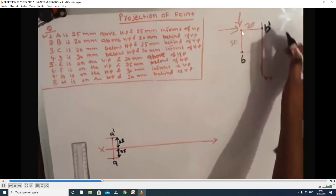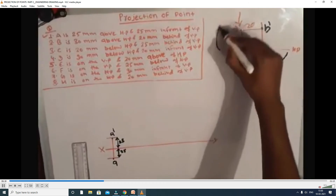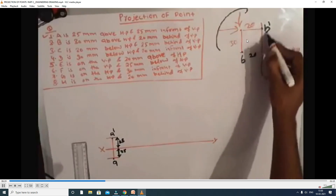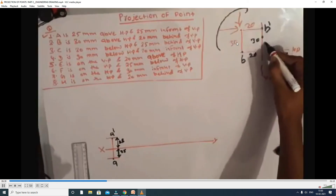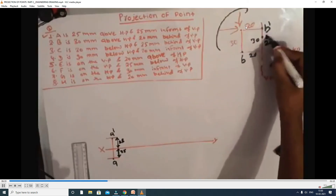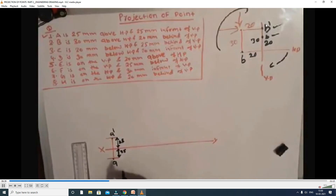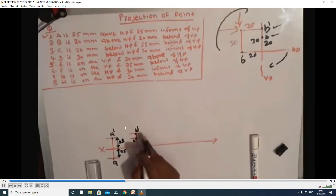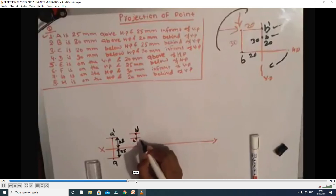Second coordinate: the point is 30 mm above HP and 20 mm behind VP. The horizontal plane rotates 90 degrees. Front view projects on VP — so 30 mm above the reference line. Top view projects on HP — it rotates 90 degrees and projects above the reference line as well. Both front view and top view appear above the reference line.